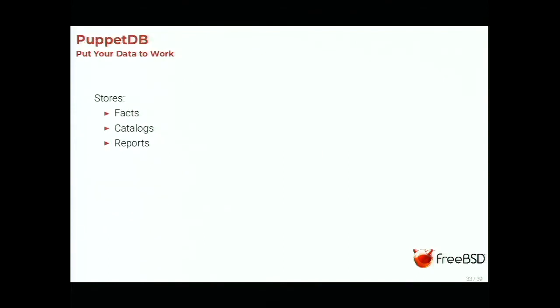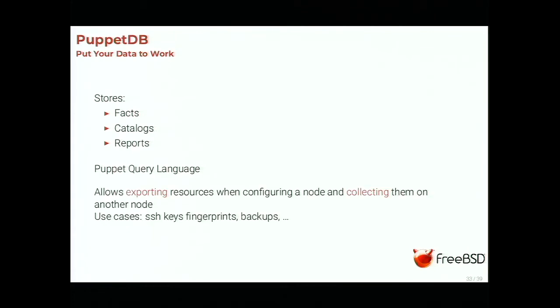Now let's talk about another great piece of Puppet — in fact my favorite one — which is PuppetDB. As the name suggests, PuppetDB is a database. It uses PostgreSQL for storage and stores facts, catalogs, and reports — everything that goes between agents and master. Because it stores them in a database, you can also query the data; for example, you may want to know which nodes have more than 5 gigabytes of RAM and are configuring Apache.